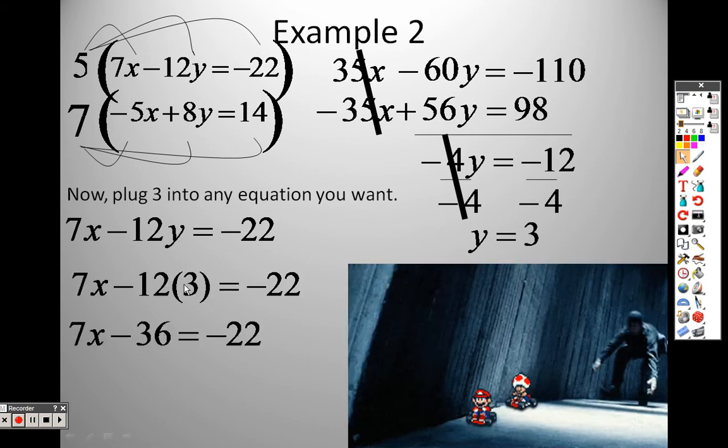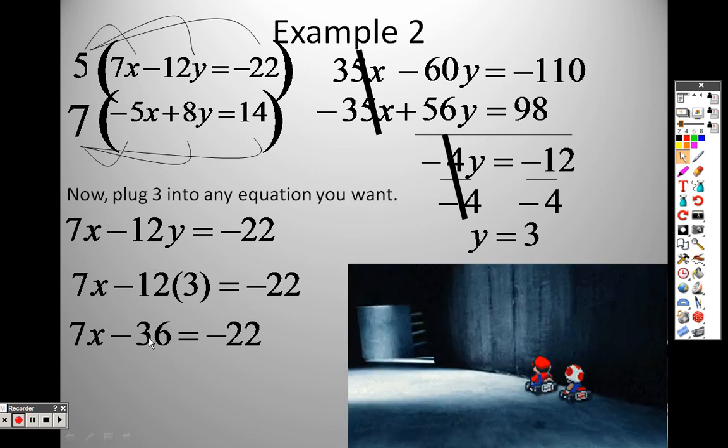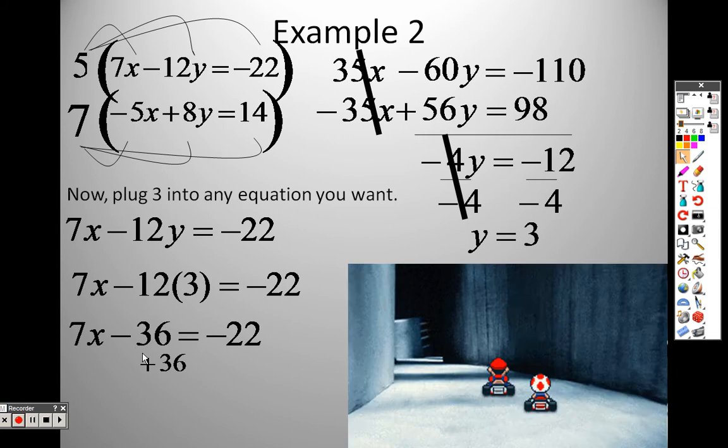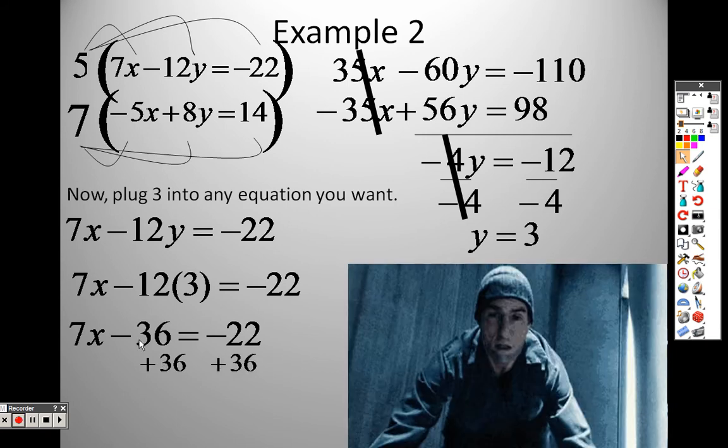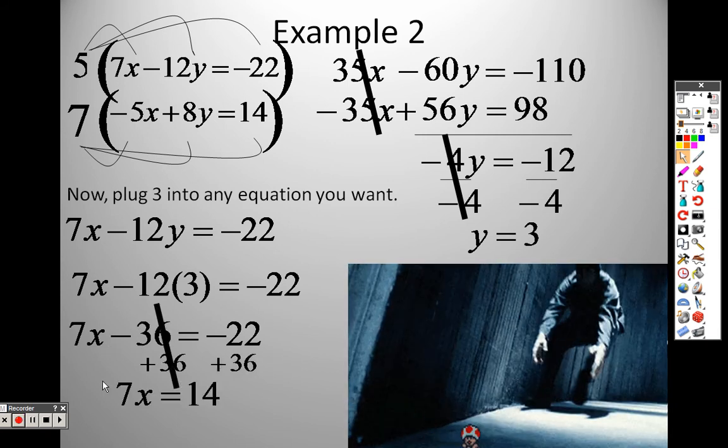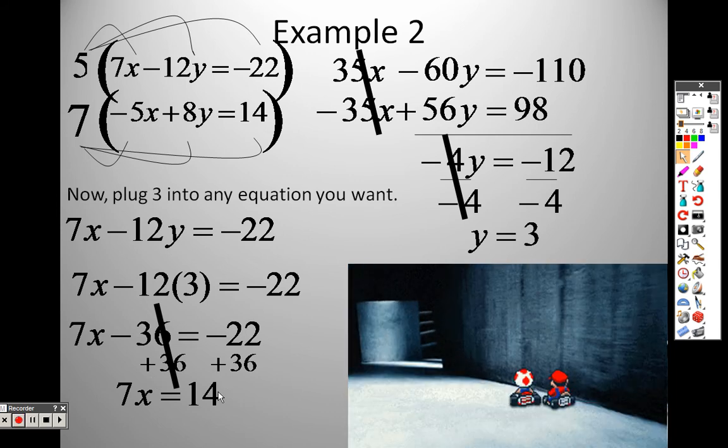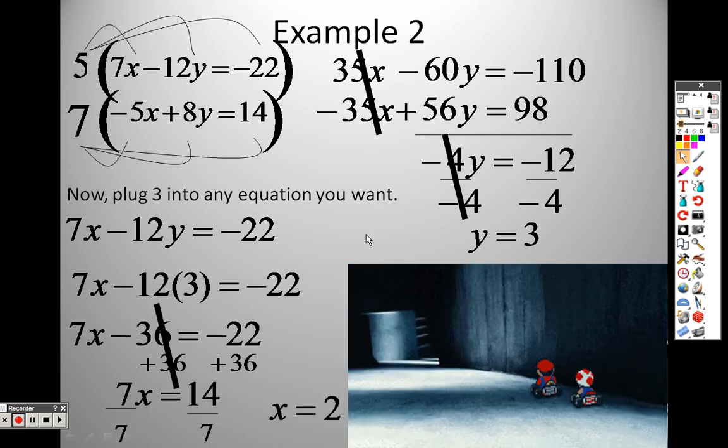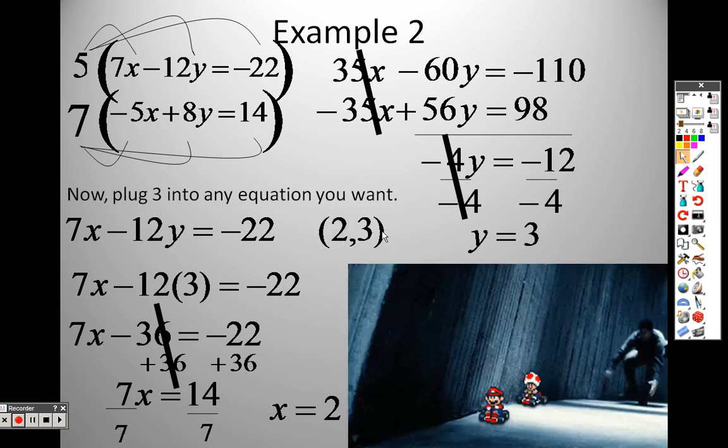12 times 3, that's 36. So I have 7x minus 36 equals negative 22. To get x by itself, I would add 36 to both sides. So those cancel out. I have 7x equals 14. And I would divide both sides by 7 to get x equals 2. So when I put those together, the answer that works is 2, 3.